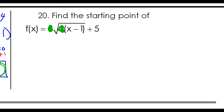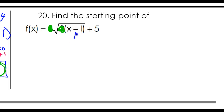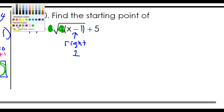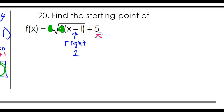So when you look at this, all we really have to worry about is this negative 1 is going to shift the function to the right by 1. Notice it's the opposite of what it sort of looks like. And this plus 5 on the end is going to have the effect of moving the graph up 5. So we have a right 1, up 5 happening.